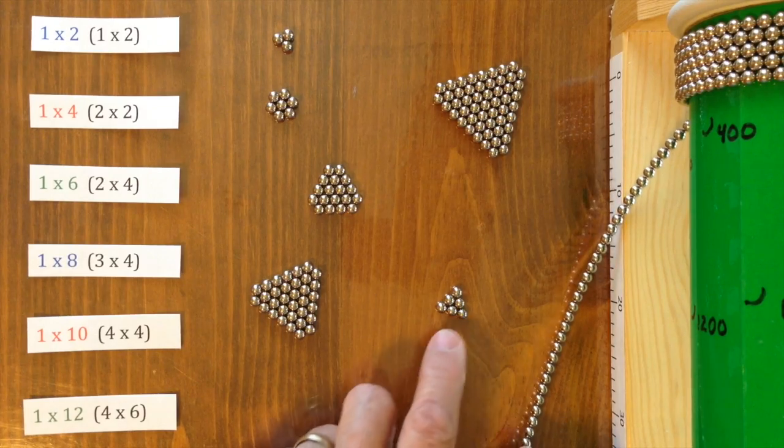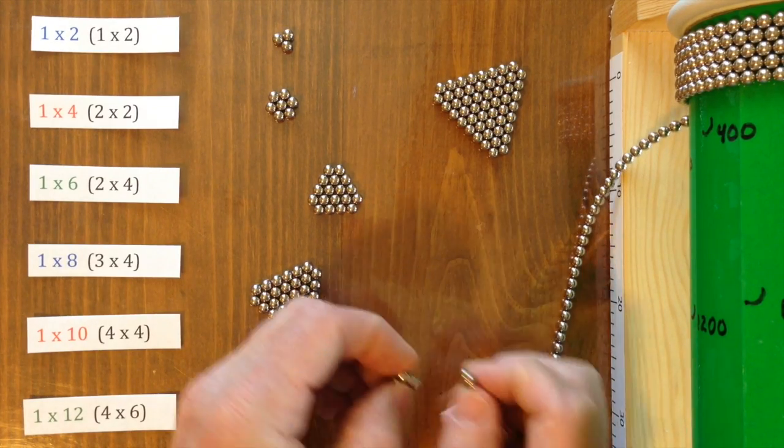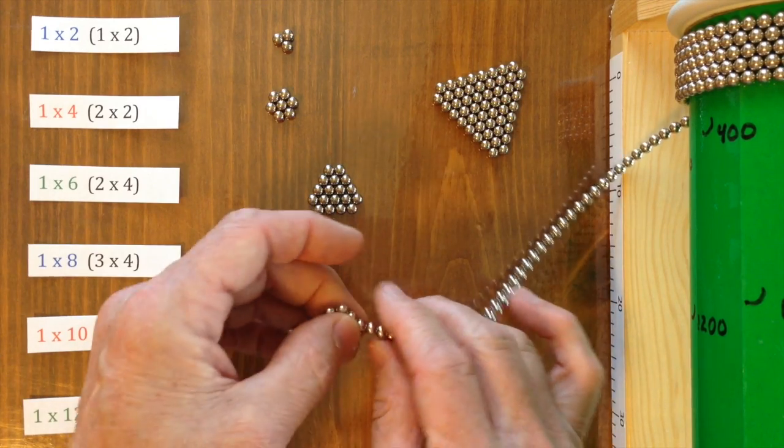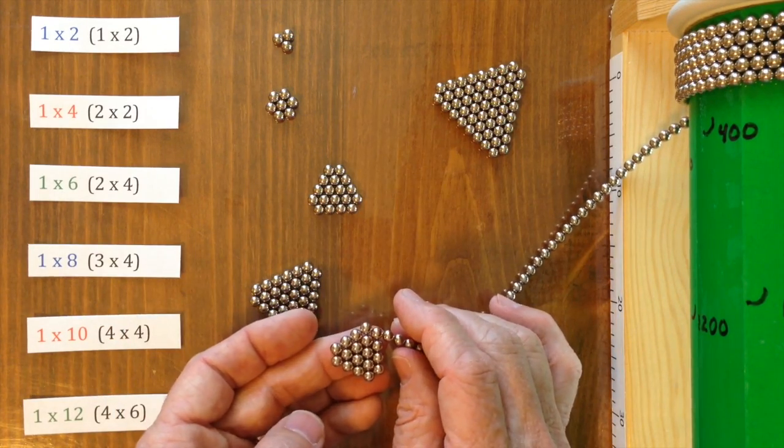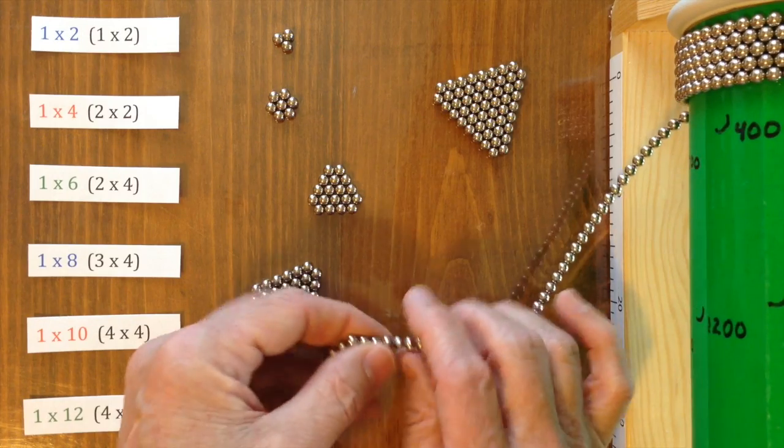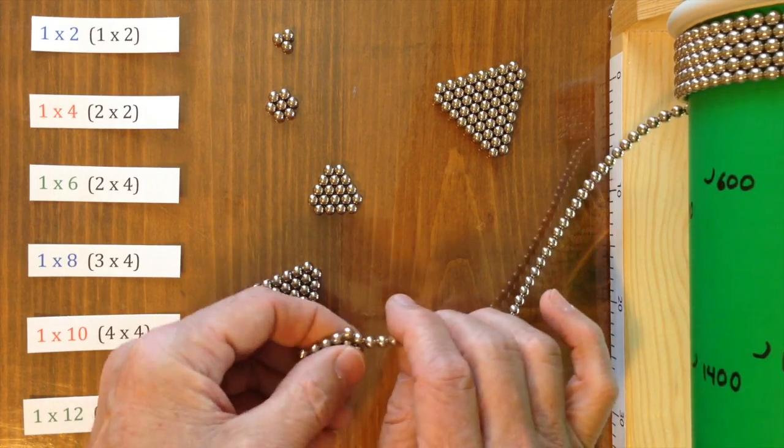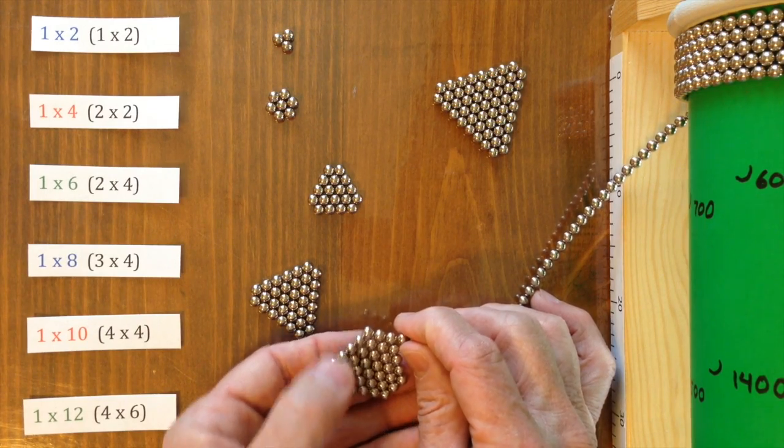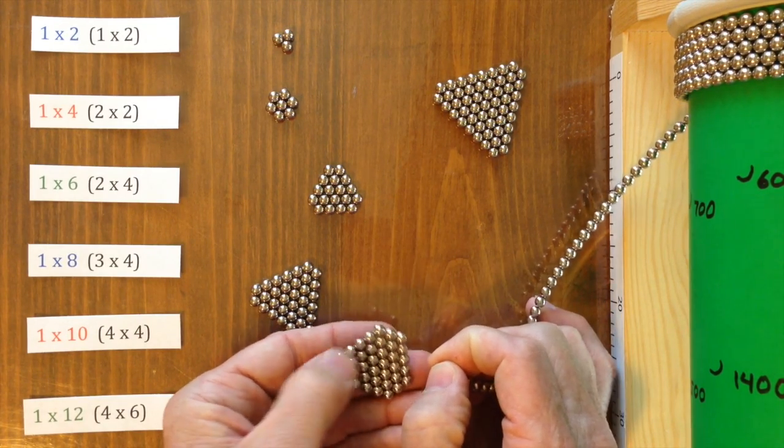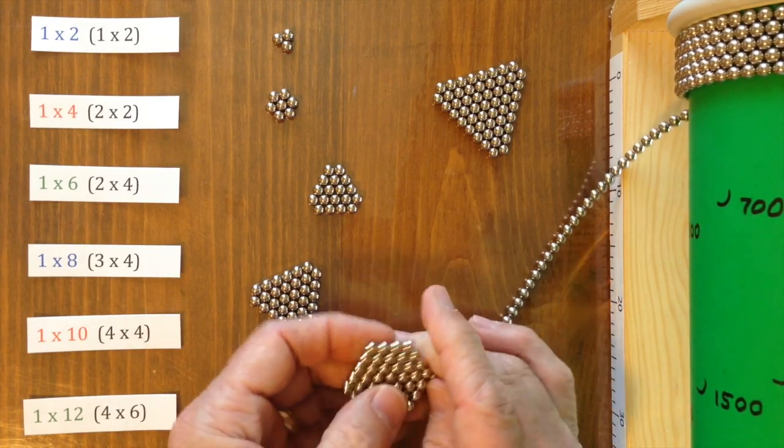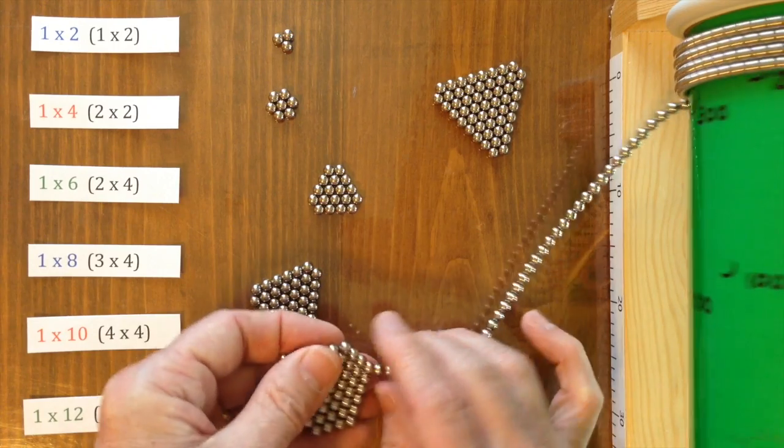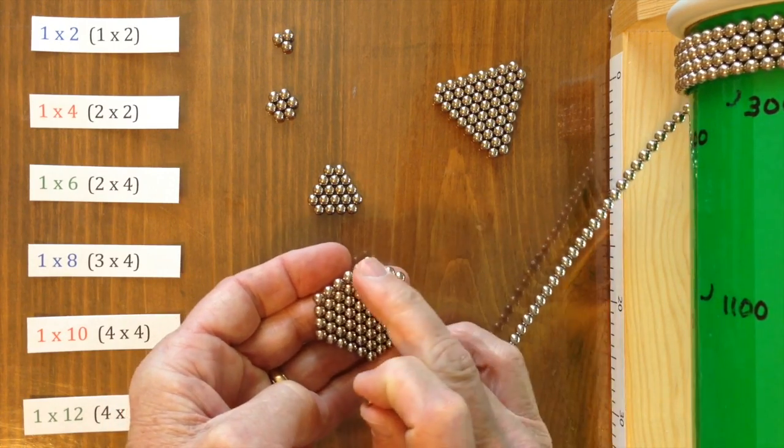But anyway, back to the 1 by 12. We're starting off with a 1 by 3. And we add one layer to form a 2 by 4. Another layer to make a 3 by 5. And then another layer to make a 4 by 6.